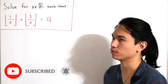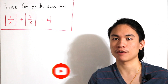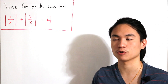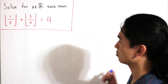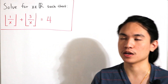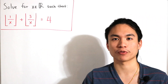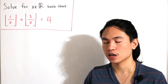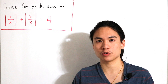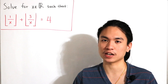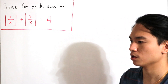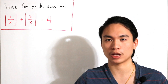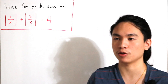It's pretty straightforward — just use the definition of the floor function, also known as the greatest integer function. For example, the floor of 1.5 is 1, the floor of pi (3.14...) is 3, the floor of e (2.71...) is 2, the floor of 1 is 1, and the floor of 100 is 100.